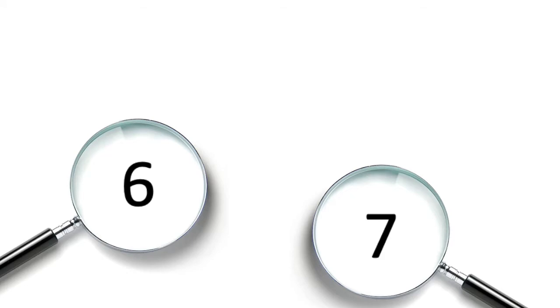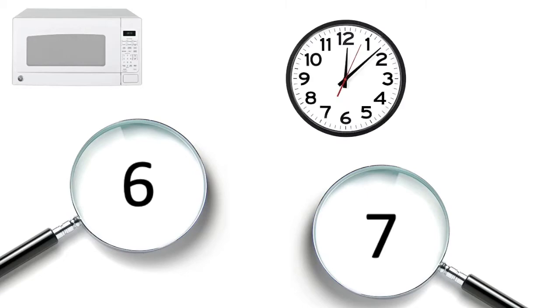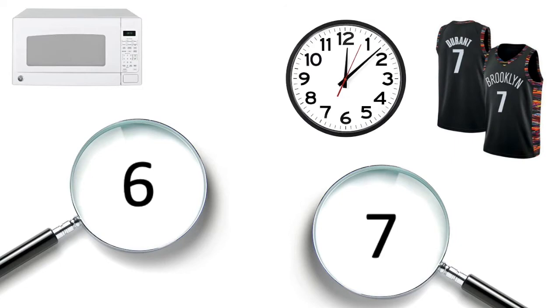I bet some of you found the number 6 and 7 maybe on the microwave or on the stove. Others maybe saw the number 6 and 7 on a clock. Maybe you even found a shirt or a jersey that has the numbers 6 and 7 on it. And some of you found groups that have 6 or 7 in all like Legos or blocks.